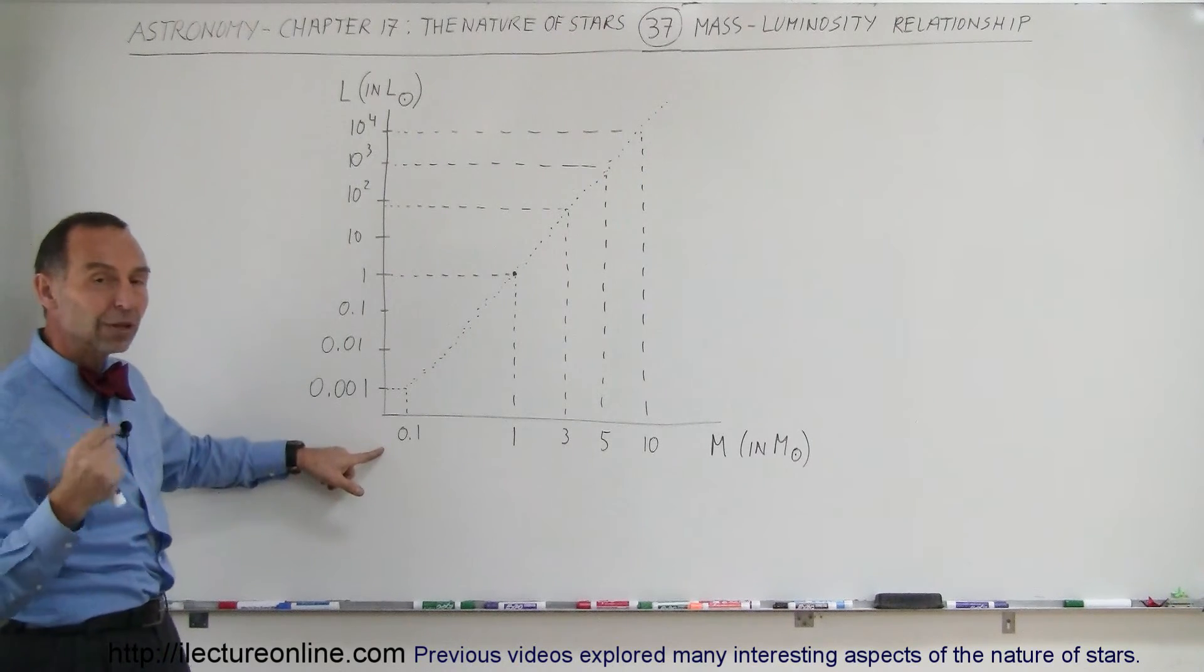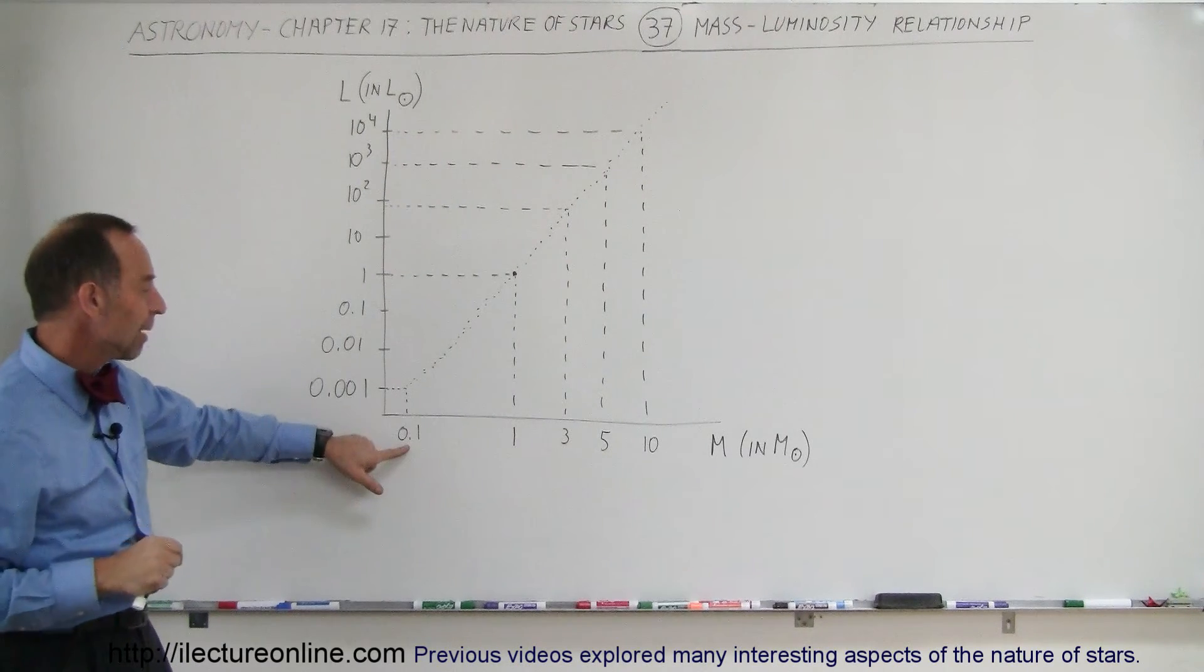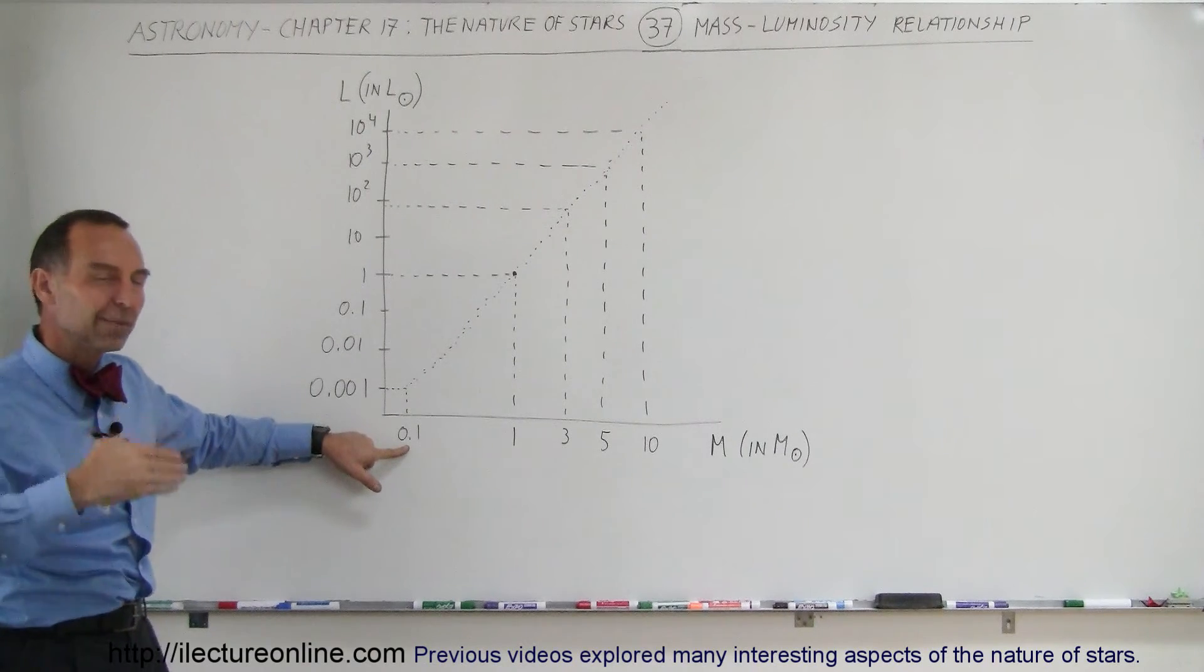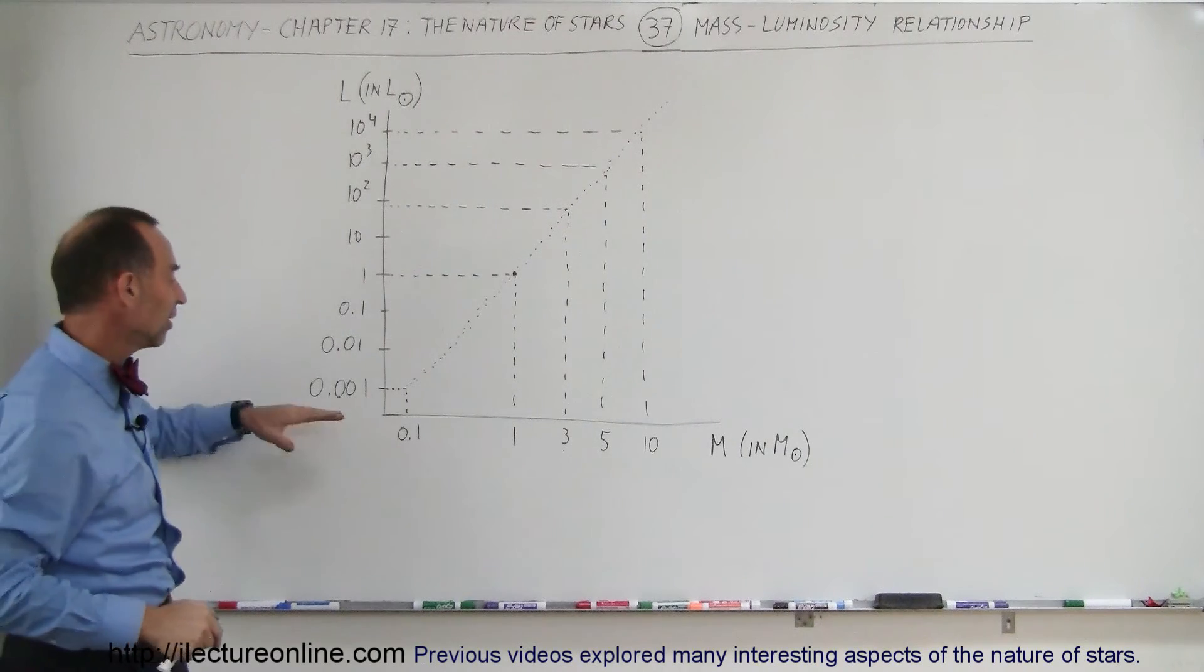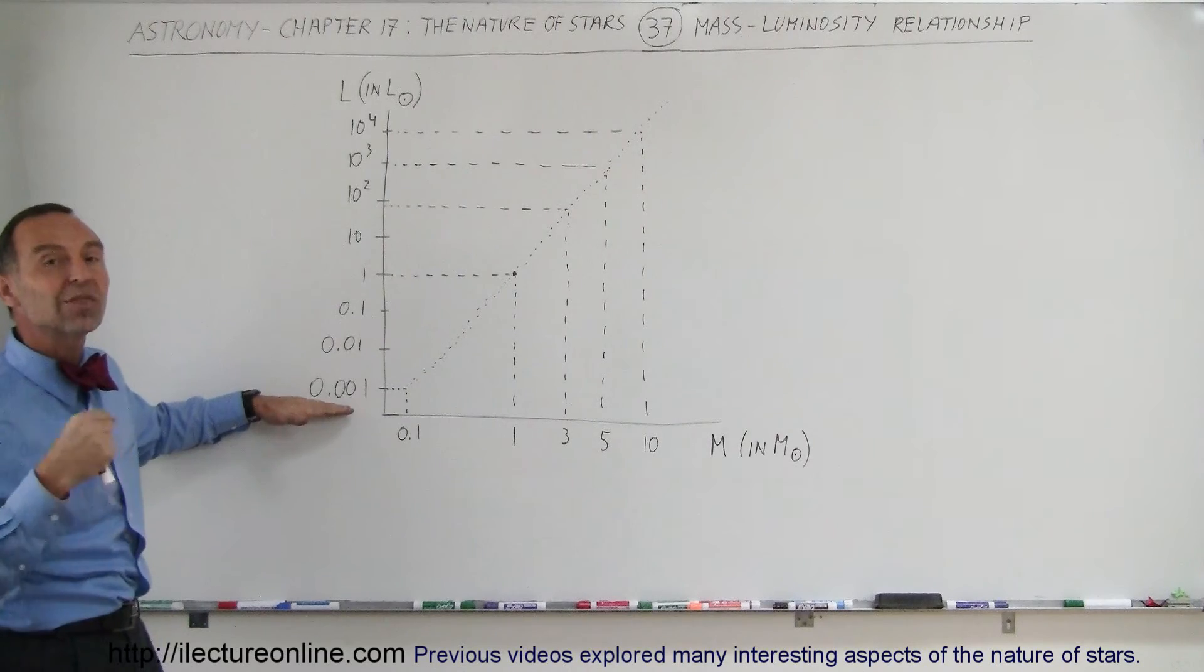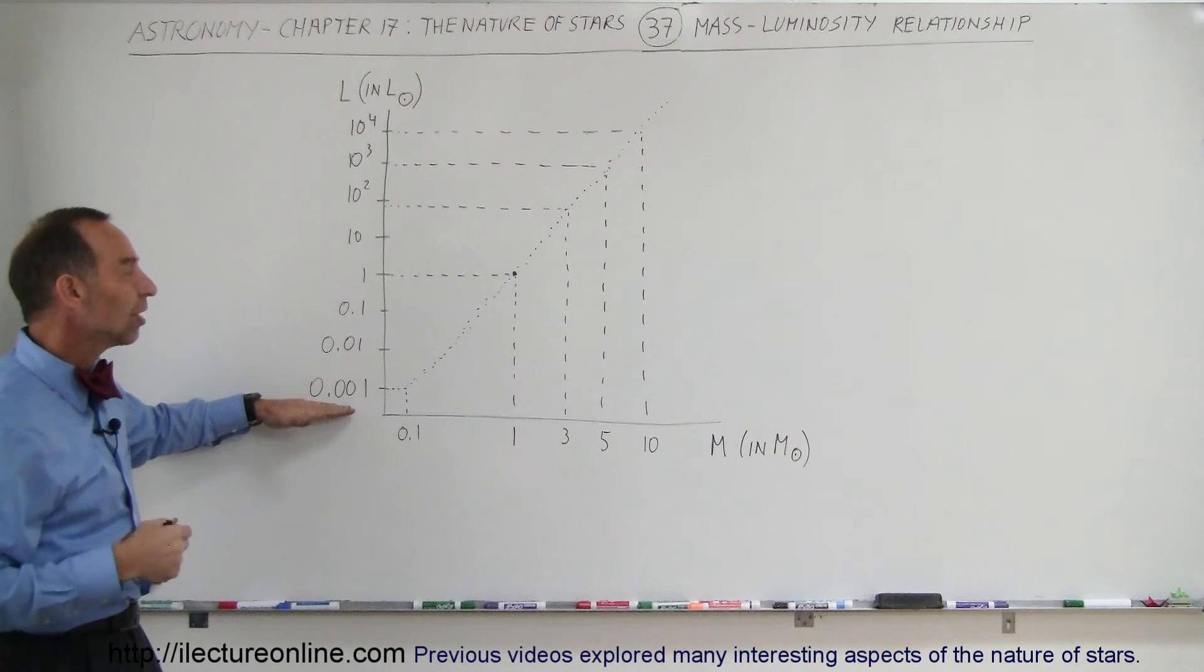On the other side of the scale, when we get down to pretty well the smallest size that stars can be, about 0.1 times the mass of the sun—remember the lowest limit is 0.08 times the mass of the sun—the luminosity is about 1,000th the luminosity of the sun.